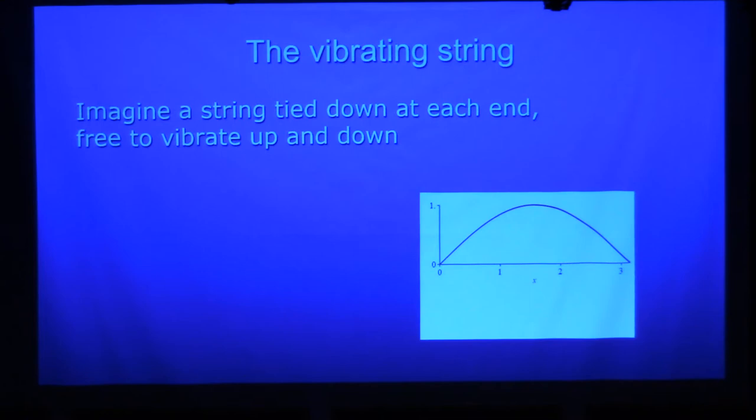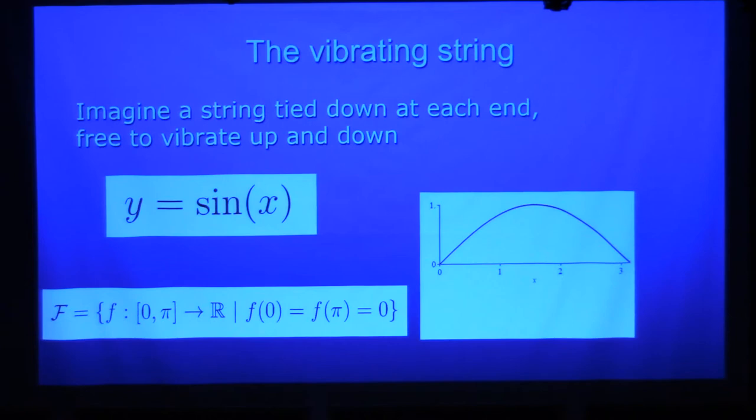Imagine a string like a violin string that is tied down at both ends. It's free to vibrate up and down. For technical reasons, I'm going to assume that it only vibrates up and down, not side to side. This is most realistic if the vertical dimension that's shown here is really quite smaller than is shown here. So that's the formula for it. This is the simple arch of a sine curve, just like that.